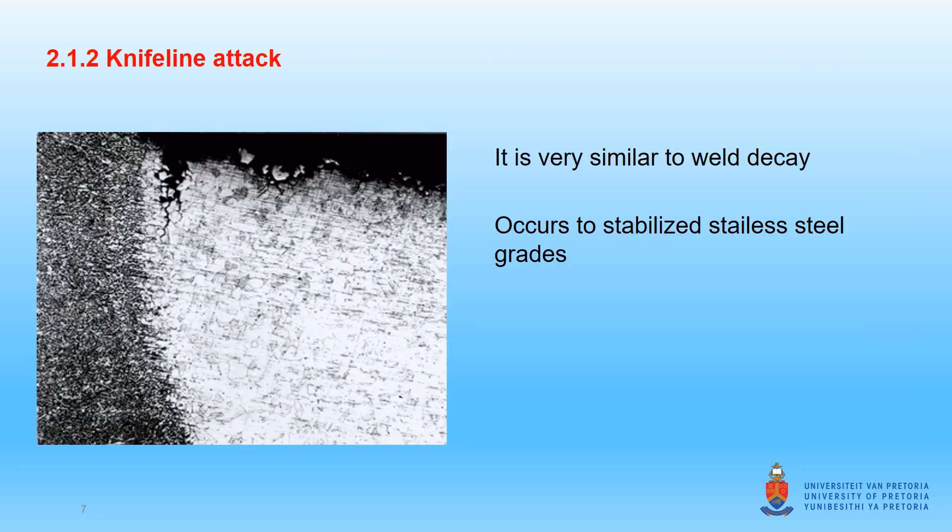Another common defect that is very similar to weld decay is knife line attack. It is observed only in stabilized stainless steels. This type of attack occurs when the stabilizing carbides, like niobium or titanium carbides, dissolve at elevated temperatures in the region just adjacent to the fusion line. Upon cooling, chromium-rich carbides will form faster than the niobium or titanium carbides, resulting in a narrow sensitized region. Further away from the fusion boundary, niobium or titanium carbides do not dissolve and sensitization therefore does not occur in these regions.